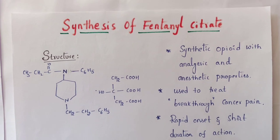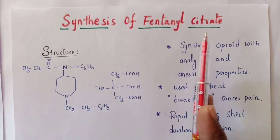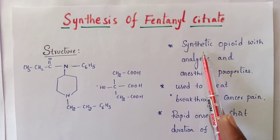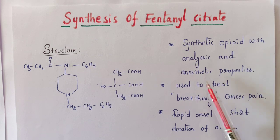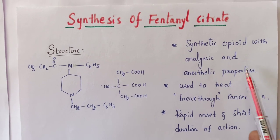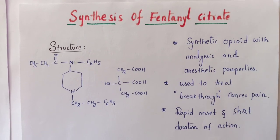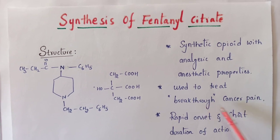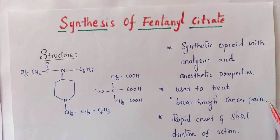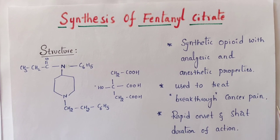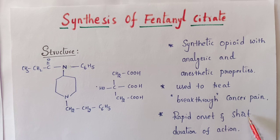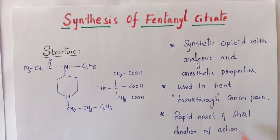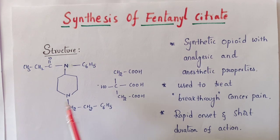In this video I would like to explain about the synthesis of fentanyl citrate. Fentanyl citrate is a synthetic opioid with analgesic as well as anesthetic properties. It is used to treat breakthrough cancer pain. It comes under the category of rapid onset and short duration of action.